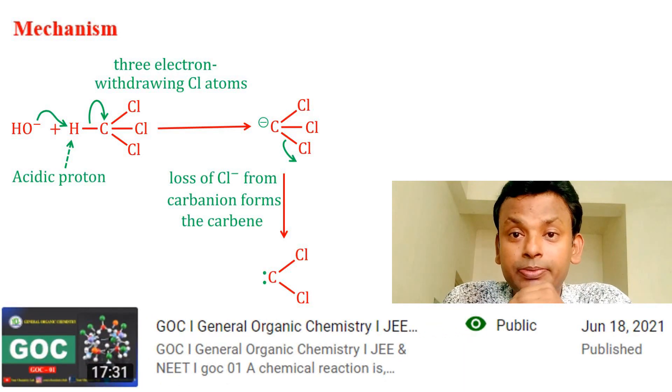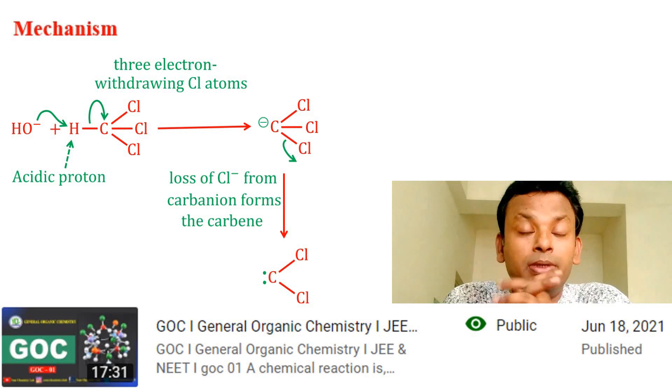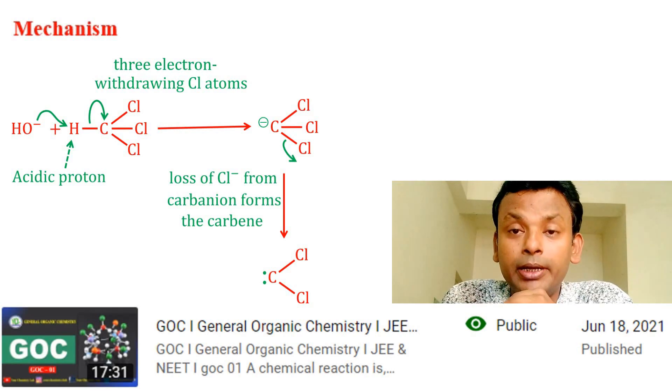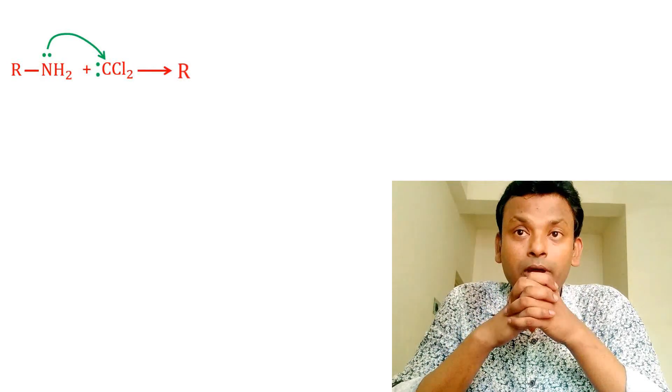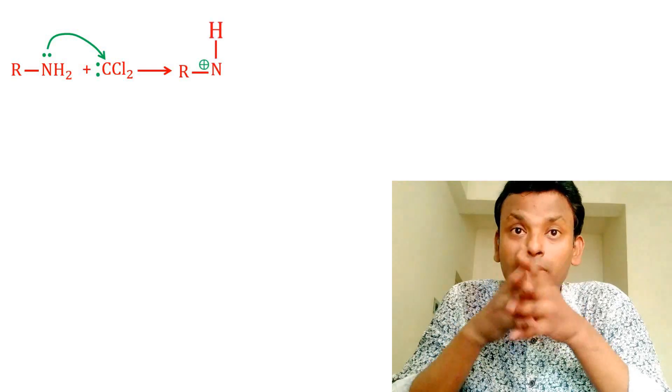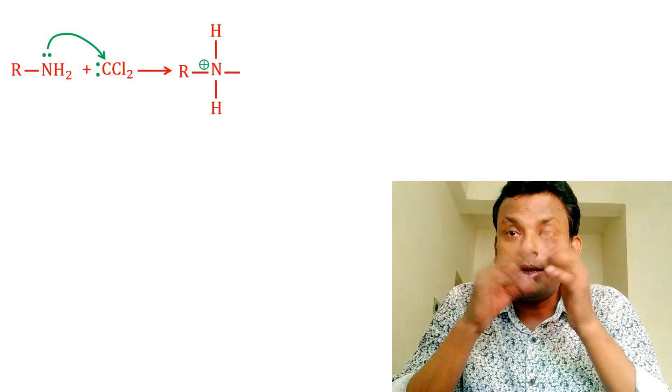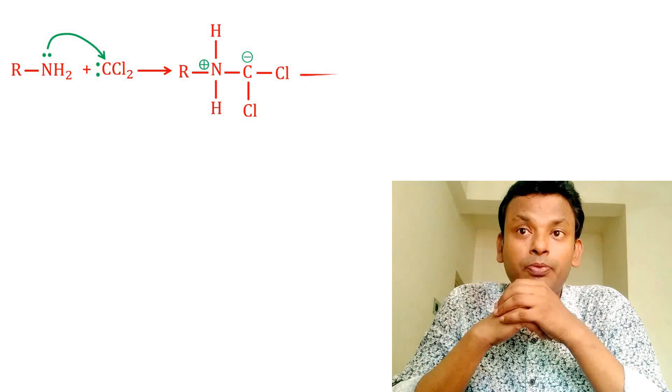The amine that has one lone pair attacks the electrophile, that is dichlorocarbene, to form this compound. And here OH negative, that is the base, accepts a proton from this compound.